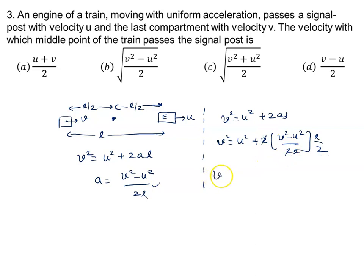It is v² = u² + (v² - u²)/2. We cancel, so it becomes u²/2 + v²/2.